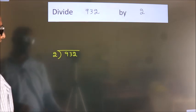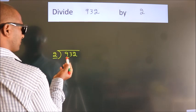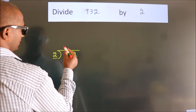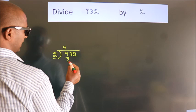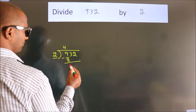Next, here we have 9, here 2. A number close to 9 in 2 table is 2 times 4 equals 8. Now we should subtract. We get 1.